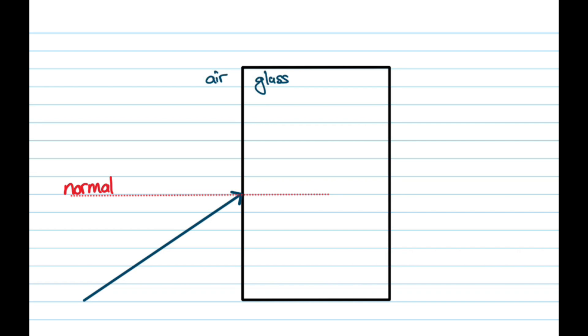We know that air is less dense and glass is more dense. So the light ray is going to bend towards the normal. And it's only going to continue until it reaches the next surface.